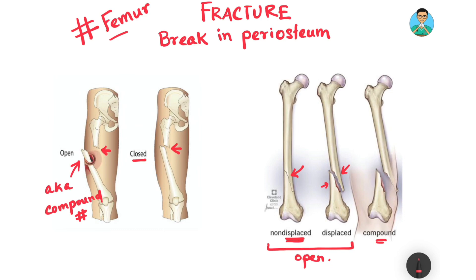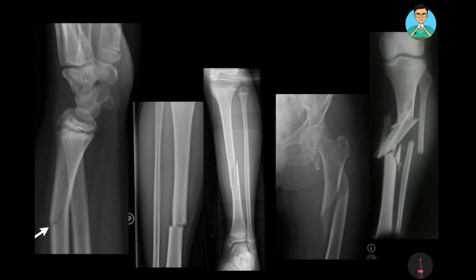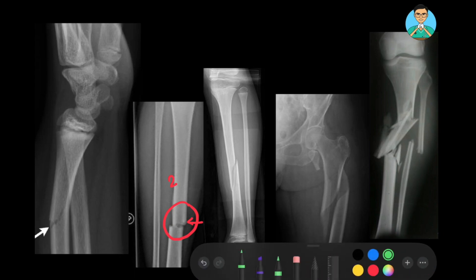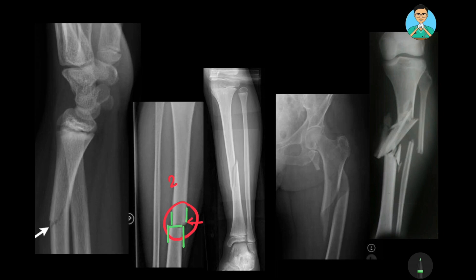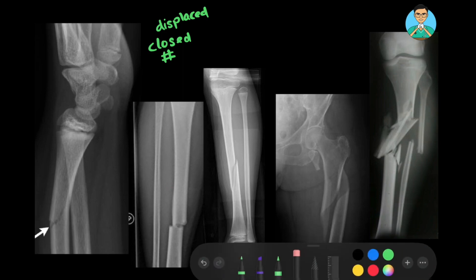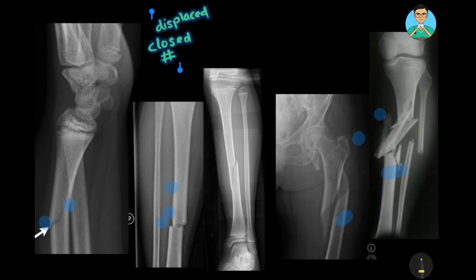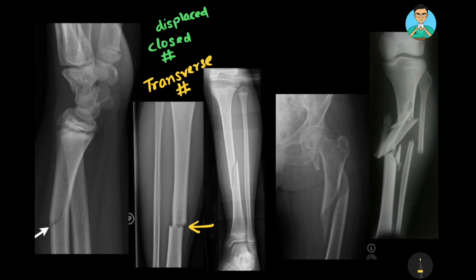Now let us look at X-rays to understand the different types of fractures. In this first X-ray, you can clearly make out the fracture line with two fragments of bone and a relative displacement — the fragments have shifted away. So this is a displaced, closed fracture. The direction of force here is horizontal, and this type of fracture is known as a transverse fracture because the fracture line is transverse.